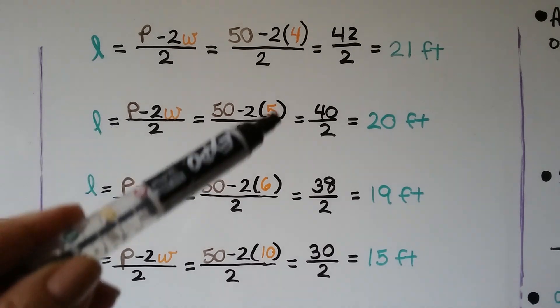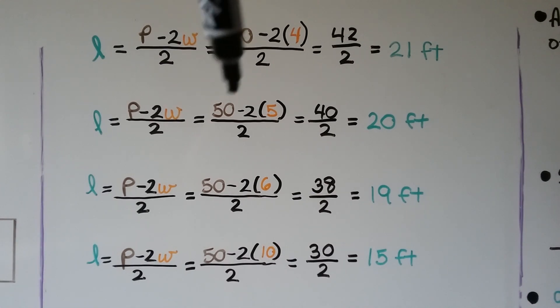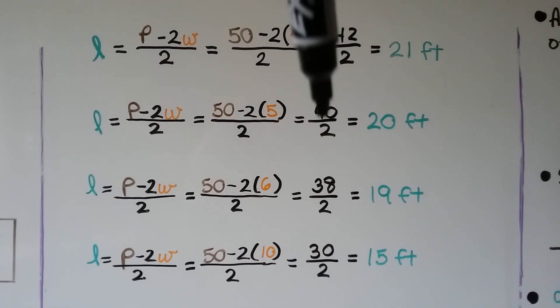If the width is 5, we're going to have 50 minus 10, which gives us 40 divided by 2, which gives us 20 feet for l.